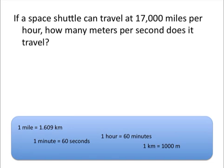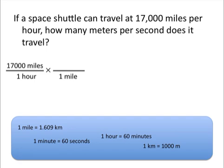Let's make things a little more complicated. If a space shuttle can travel at 17,000 miles per hour, how many meters per second does it travel? Starting with 17,000 miles per hour, we need to change miles on the top to meters and hours on the bottom to seconds. We'll change each of those units separately, starting with converting miles to meters. We need miles on the bottom so they cancel out, and we can choose the conversion factor that 1 mile is equal to 1.609 kilometers. Because miles is on the bottom, we write 1.609 kilometers on top, allowing us to cancel out miles.